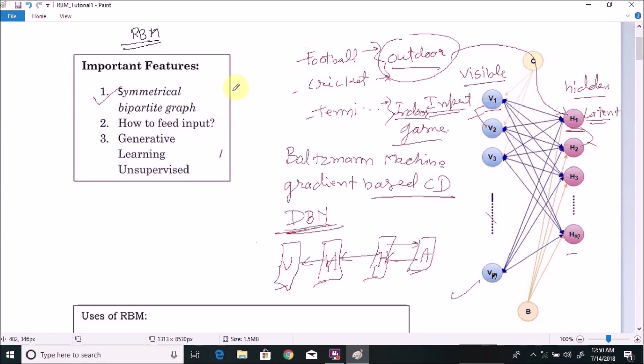Now, another important part of this Restricted Boltzmann Machine architecture is all the edges are either bi-directional or undirectional.